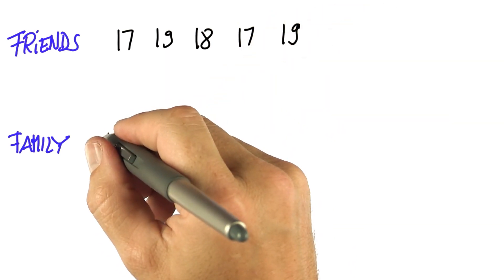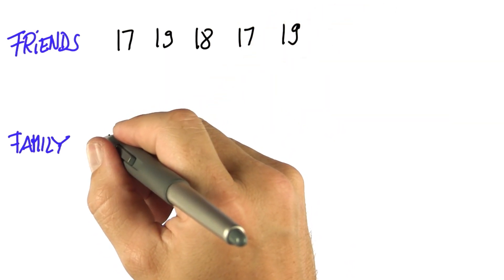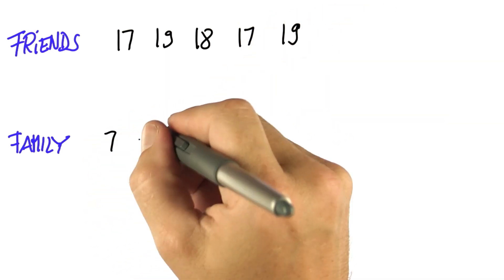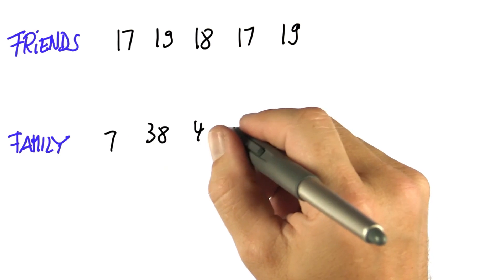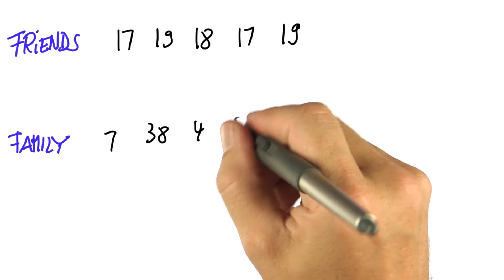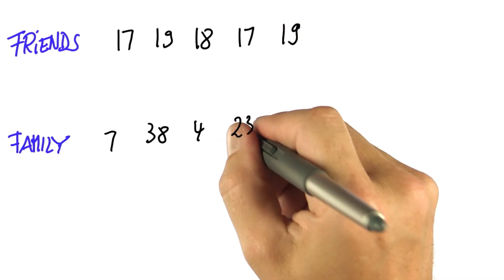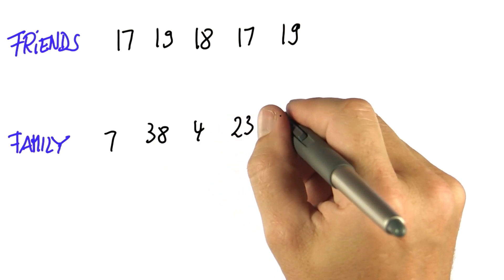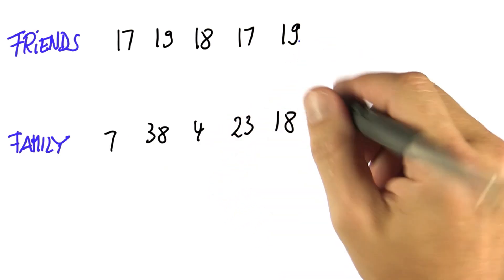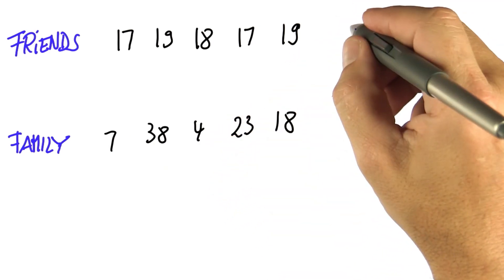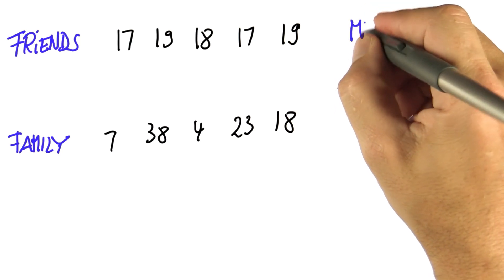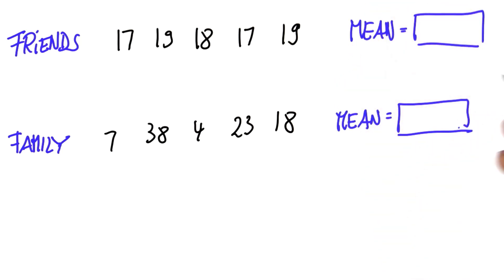You also have five close family members of ages 7, 38, 4, 23, and 18. Now for both, you can compute the mean. Please enter the mean on the right side.